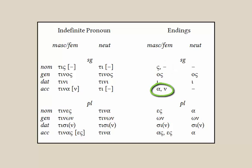The accusative singular can be either an alpha or a nu, and the accusative plural either an alpha-sigma or an epsilon-sigma. Different sub-paradigms or patterns within the third declension will use one or the other of those alternatives, as we'll see.